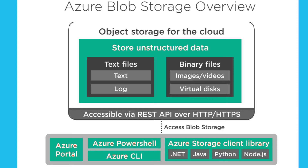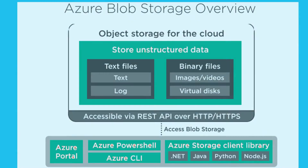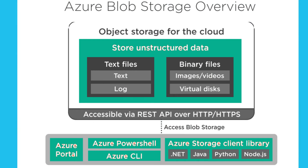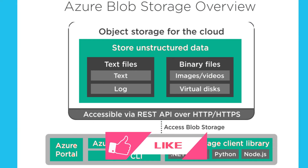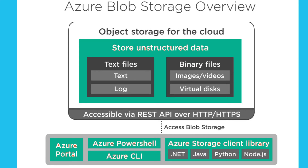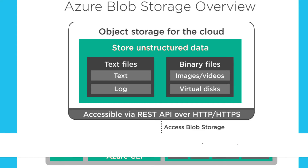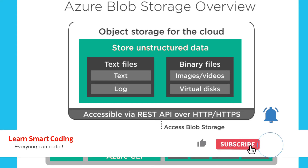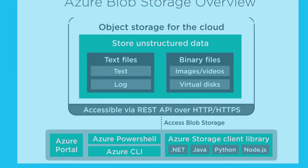You can access the data in blob storage via the Azure Storage REST API over HTTP and HTTPS — however HTTPS is the recommended option. This means you can access the file from any device. You can also access blob storage from the Azure portal, or from the command line using Azure PowerShell or CLI. To access blob storage from your application, you can use the Azure Storage client library that wraps the REST API calls. The client library supports several platforms like .NET, Java, Python, Node.js, and many more.